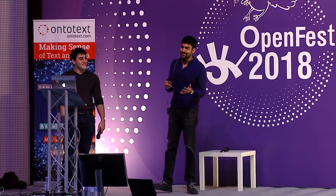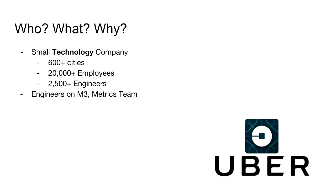We're both engineers at Uber. Uber matches riders and drivers. We used to be in Sofia two years ago — something happened, we're not there anymore — but we are in 600 other cities. It's about 20,000 people, about 2,500 engineers. Engineers basically log everything to a central system called the M3 system. The metrics team for the entire company is basically the team we work on. Every engineer that logs anything about reliability — how long it took for a person to get a ride, is my system up — all these metrics are logged to the central system.